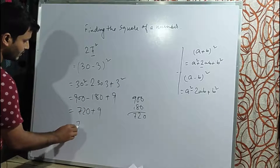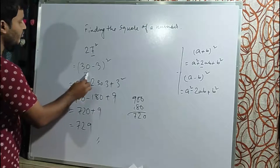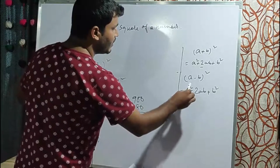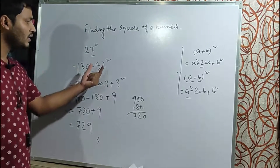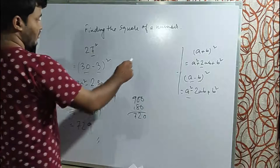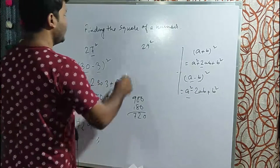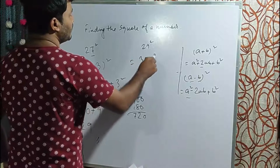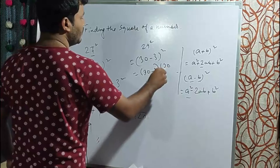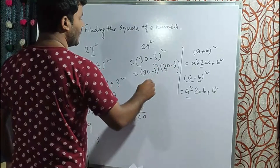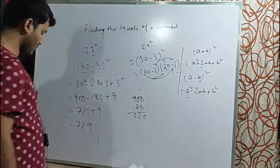There's an alternative method using a² - b². For 27², we can write it as 30² - 3², which equals (30-3) times (30+3). This gives the same result.